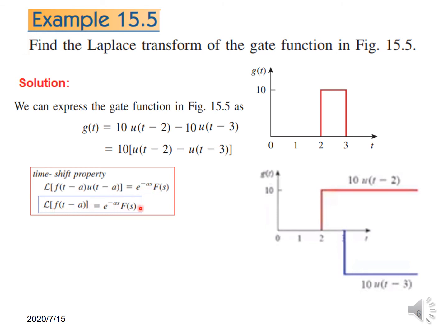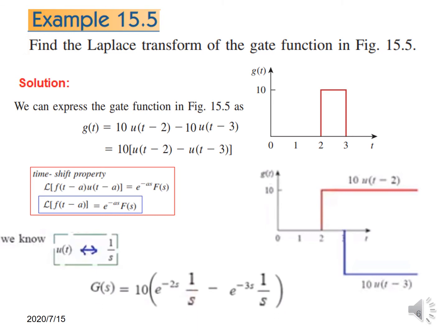The time shift property is given in the book. Some books also write a shortcut form — they do away with u(t). The Laplace of f(t minus a) is equal to e raised to the power minus as times F(s), where F(s) is the Laplace Transform of f(t). Our main function without shifting is u(t) and its Laplace Transform is 1 over s. Applying this: 10u(t minus 2) is shifted by 2, so we get e to the minus 2s, and F(s) is 1 over s.